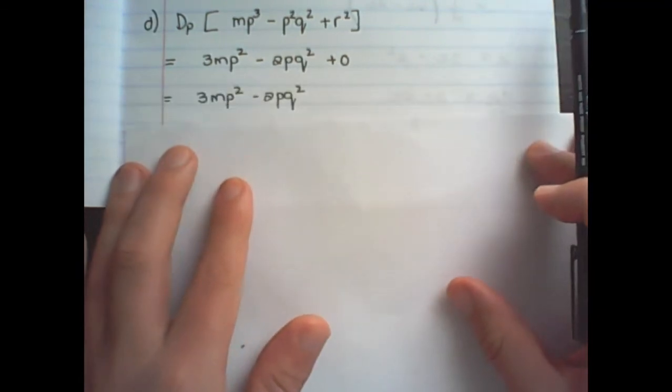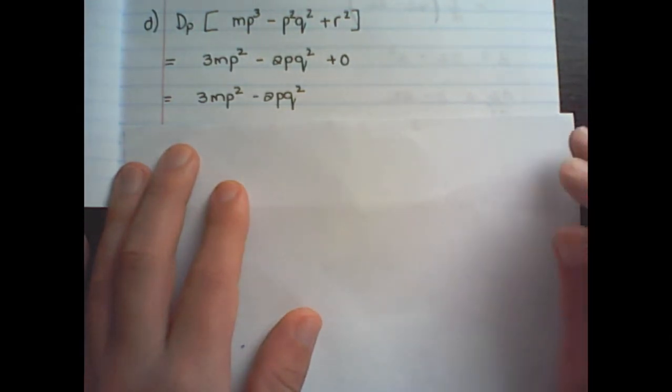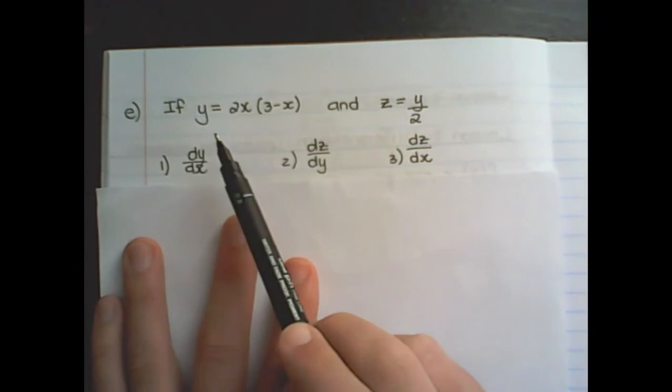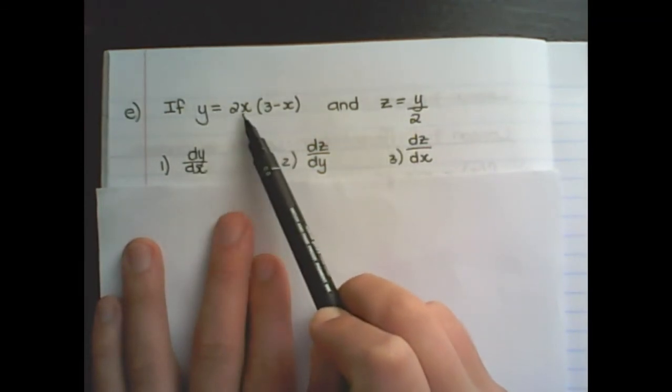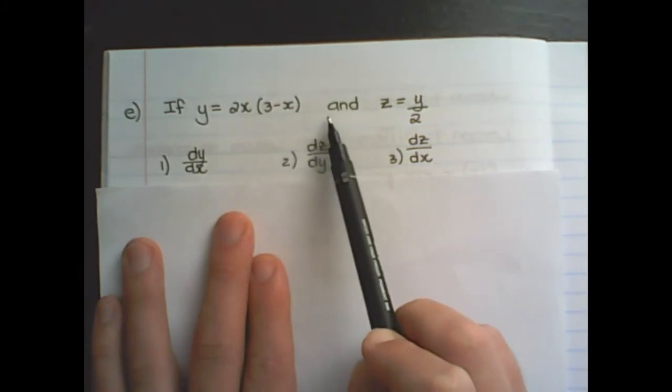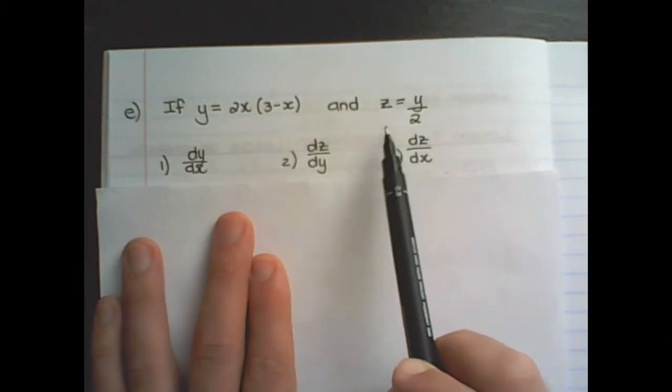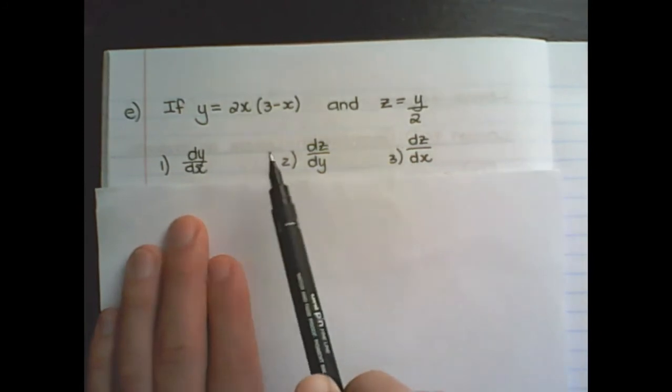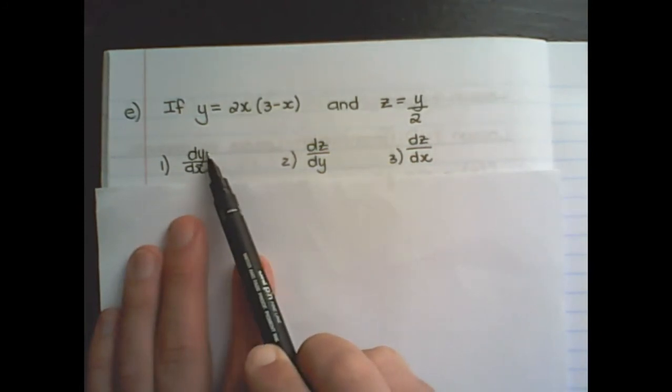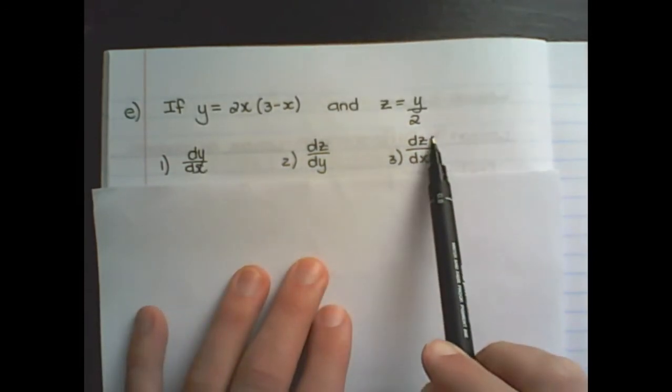Now we have two expressions. We have y is equal to 2x times 3 minus x and z is equal to y over 2, and we want to find three different forms of differentiation. We want to differentiate dy/dx, dz/dy, and dz/dx.